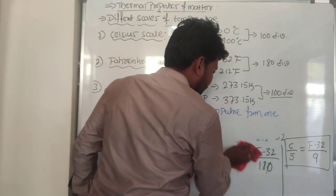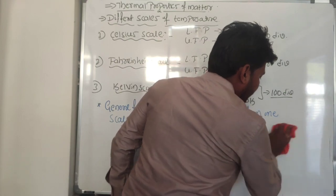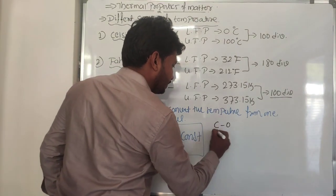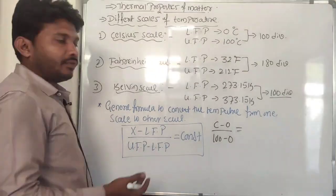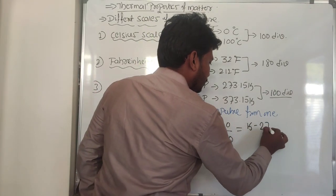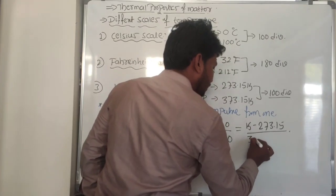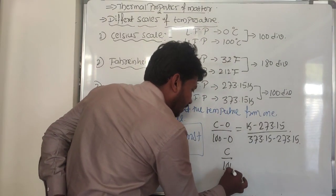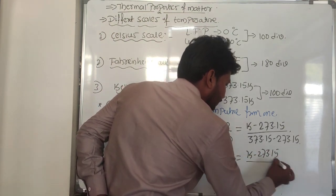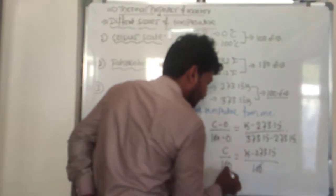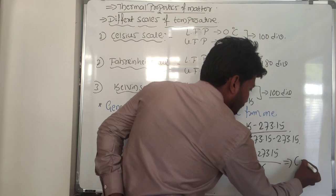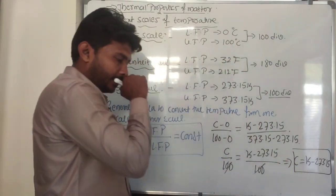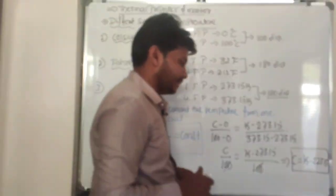To convert from Celsius to Kelvin or Kelvin to Celsius: C/100 = (K − 273.15) / (373.15 − 273.15), which gives C/100 = (K − 273.15)/100. Finally, C = K − 273.15. This is the generalized formula to convert temperature between the Celsius and Kelvin scales.